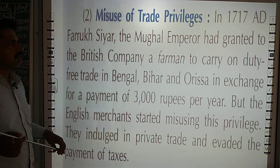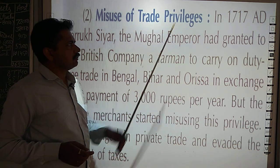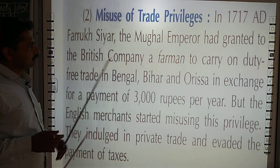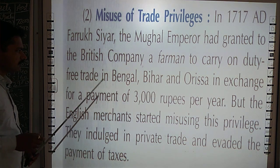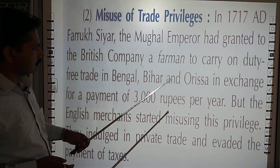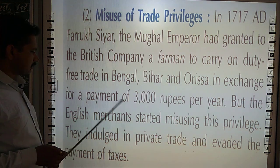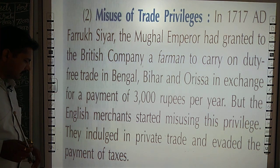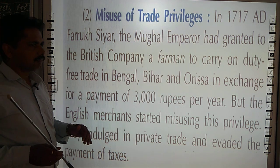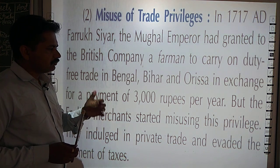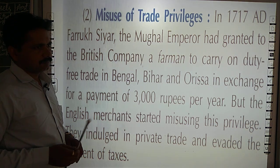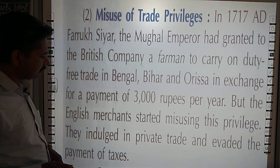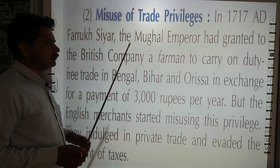The second cause is misuse of trade privileges. As I already told you, in 1717, Farrukhsiyar — that is the grandfather of Sirajud Daula — granted the British company a Farman to carry on duty-free trade in Bengal, Bihar, and Orissa in exchange for a payment of 3,000 rupees per year. But the English merchants started misusing this privilege. They indulged in private trade and evaded the payment of taxes — trading beyond the area ascribed to them and not providing the full decided tax to the Nawab. That is why there was a chance of clash.